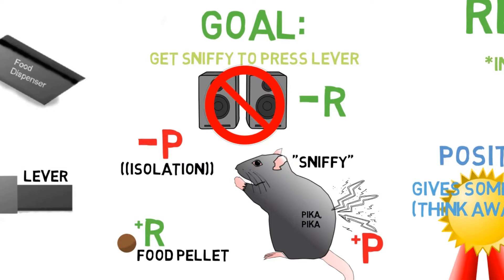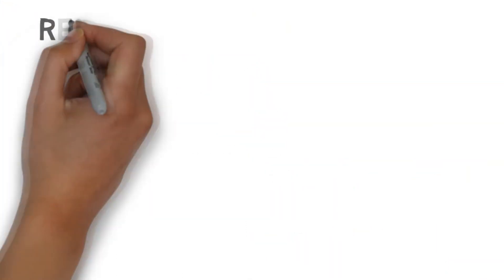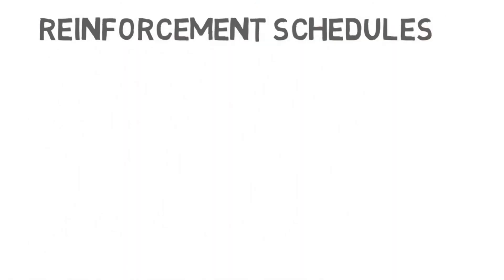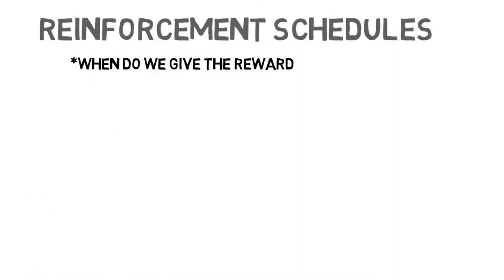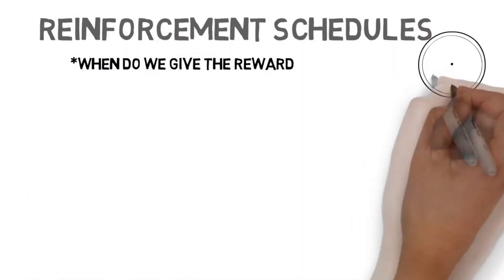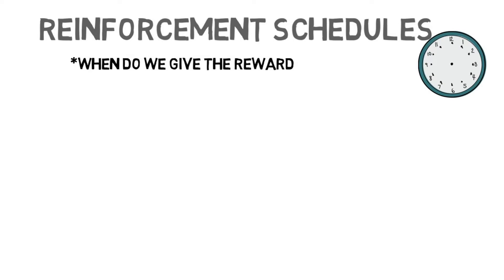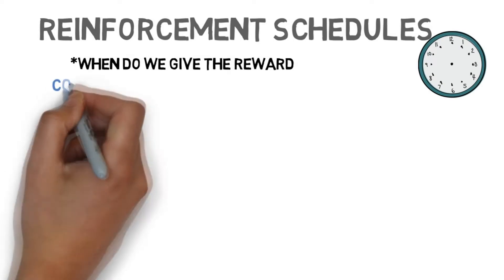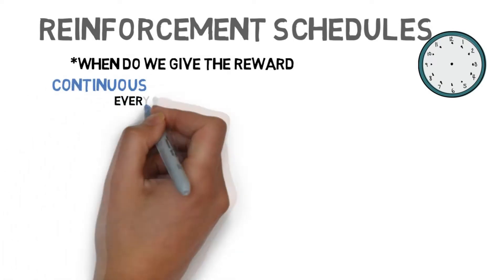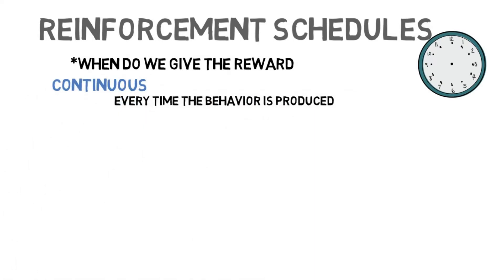Let's just keep it simple by giving him food when he presses the lever. Should we only do it once? This is where reinforcement schedules are important. Reinforcement schedules are just what they sound like — scheduling when the behavior gets rewarded. There are several kinds of schedules. First, you have continuous schedules: every time the behavior is produced, you give the reinforcement. So every time the mouse presses the lever, he gets food.